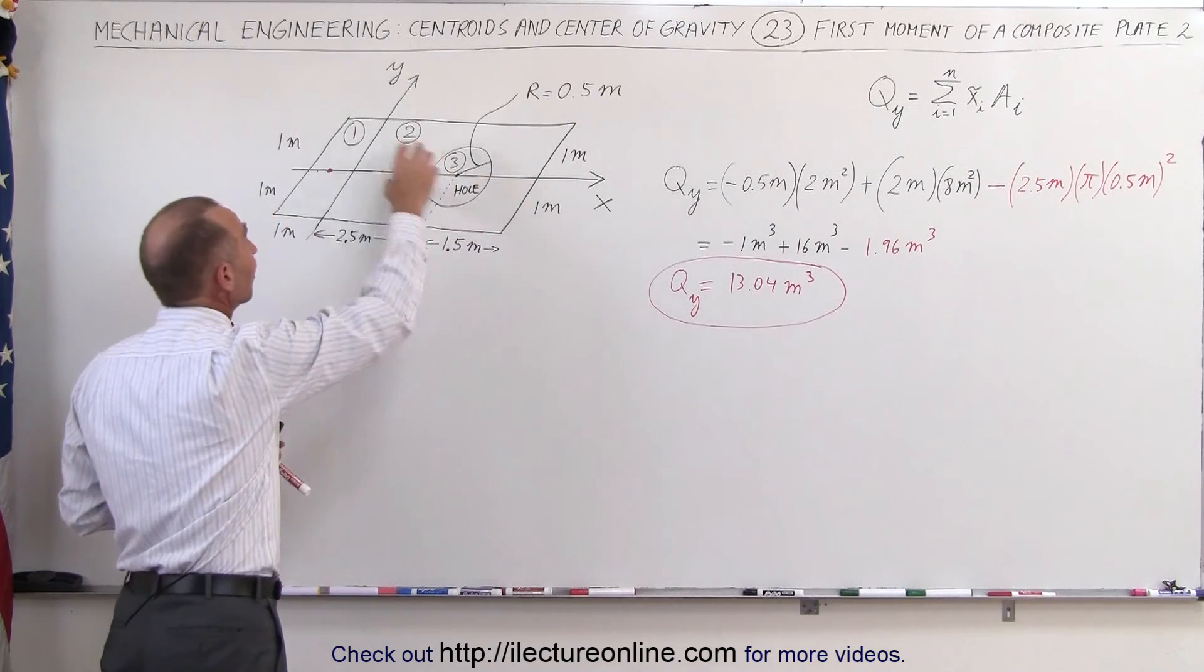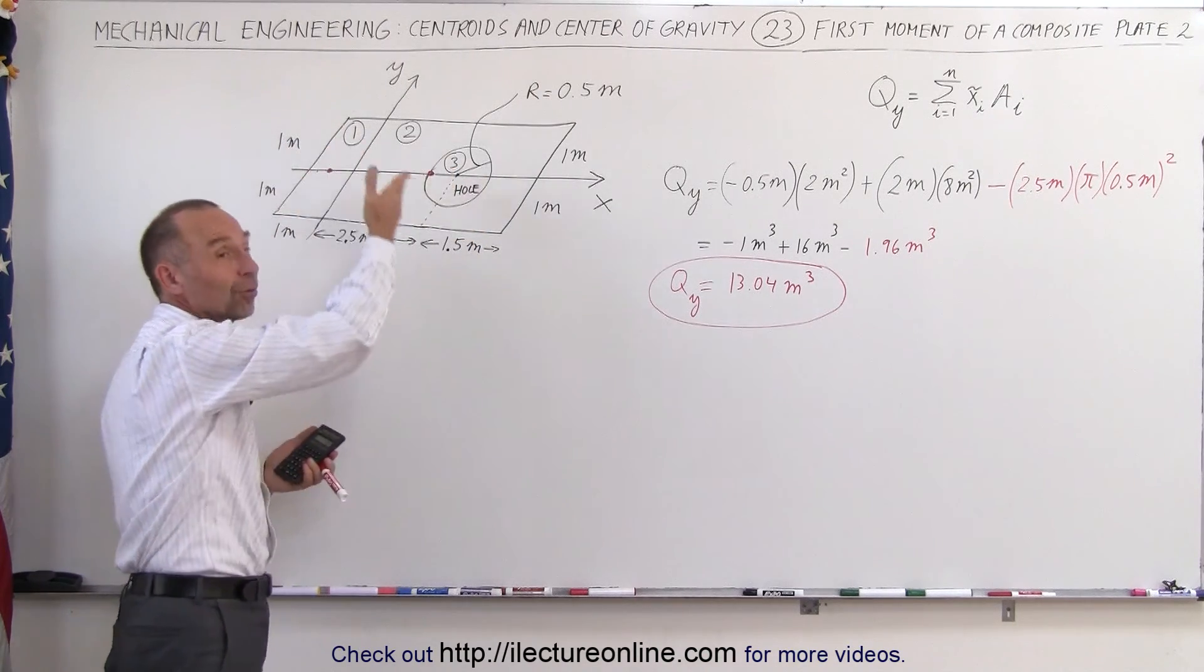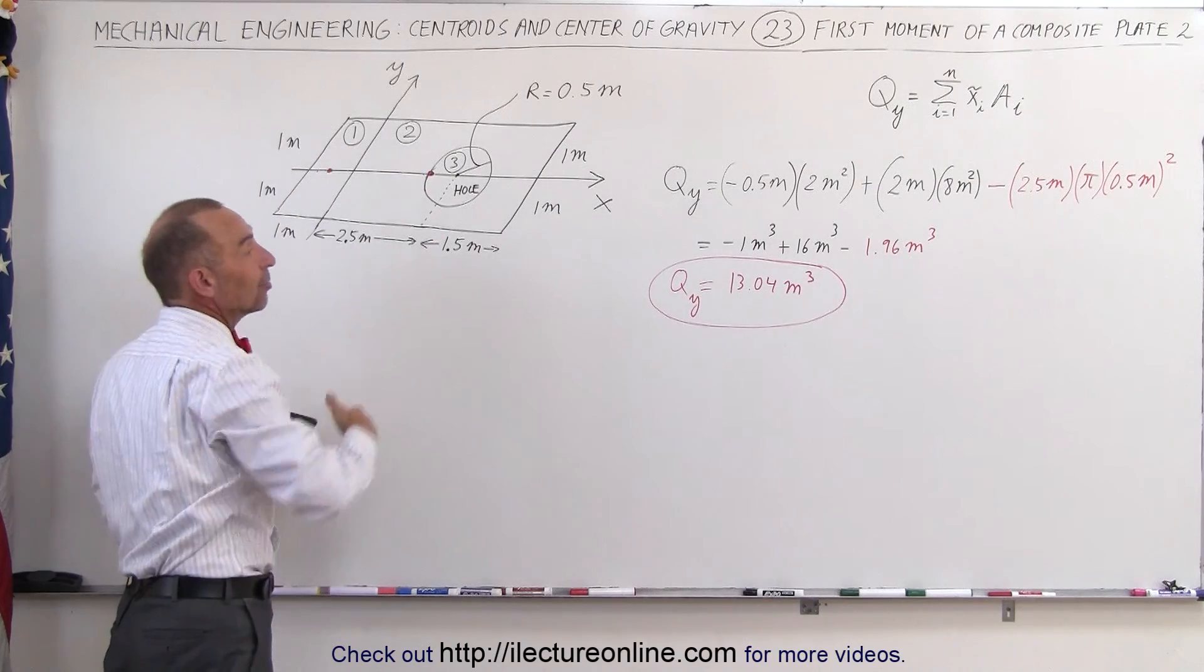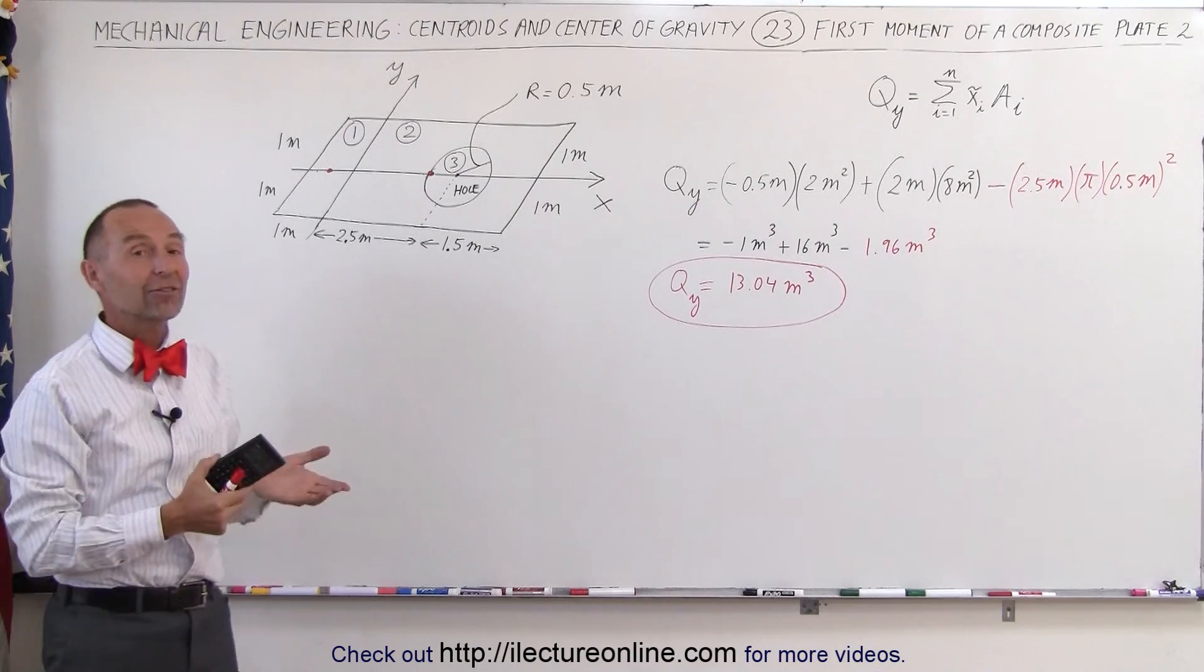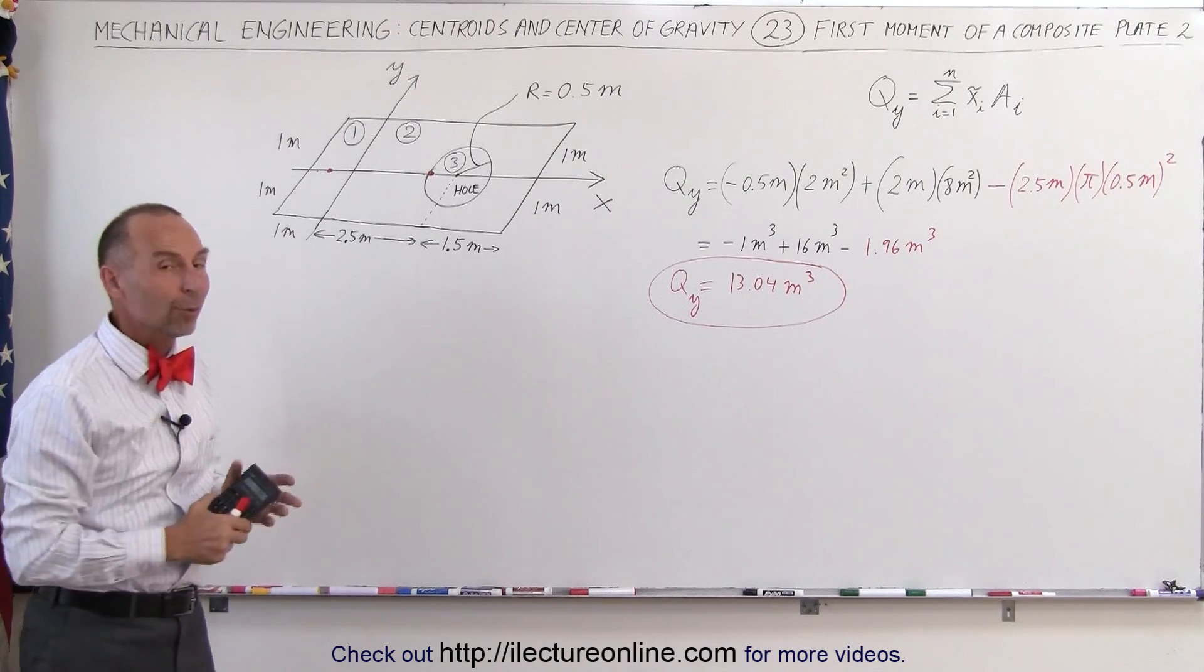Now, if there was missing mass on the left side, we would have to add that instead of subtract it, because the two negatives would negate each other. And that's how we find the first moment about an axis using a composite plate when we have holes in it.